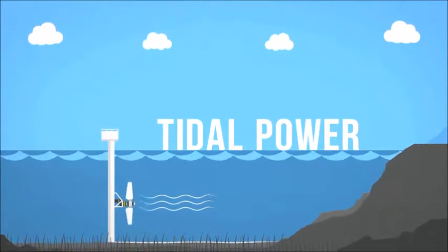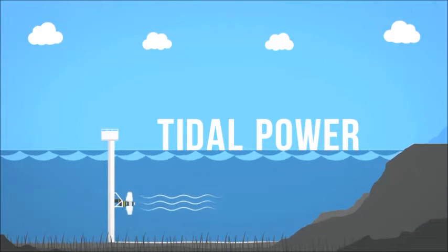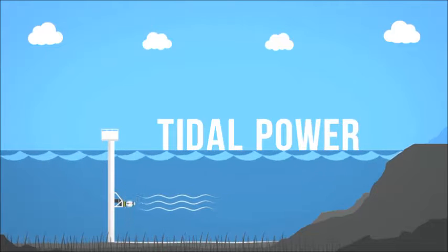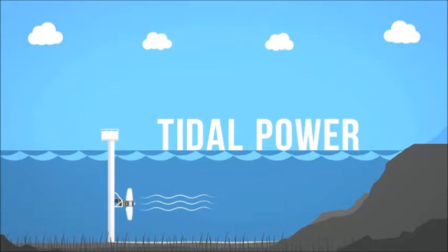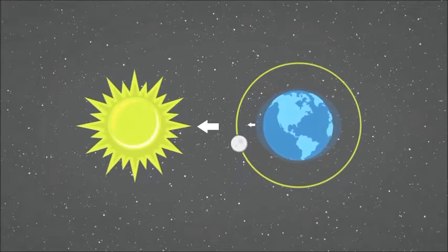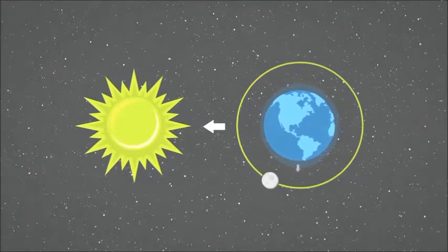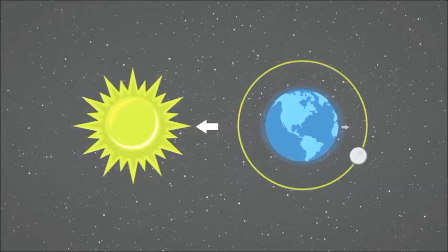Tidal power is a form of hydropower that converts the energy from the natural rise and fall of the tides into electricity. Tides are caused by the combined effects of gravitational forces exerted by the moon, the sun, and the rotation of the earth.